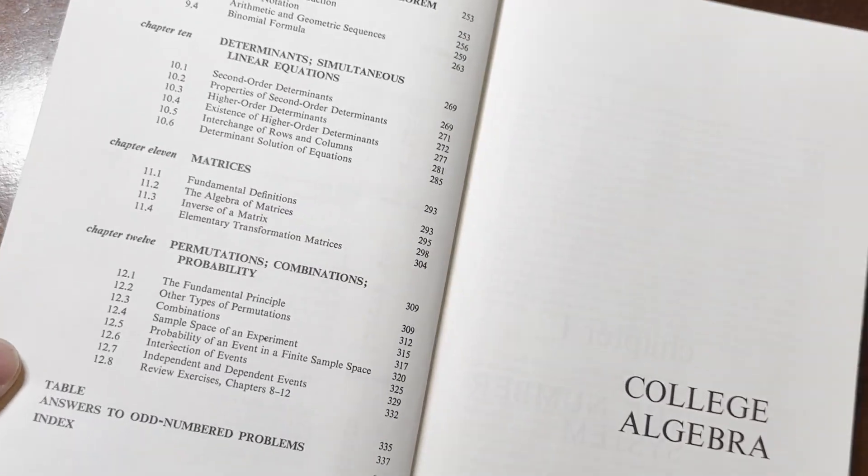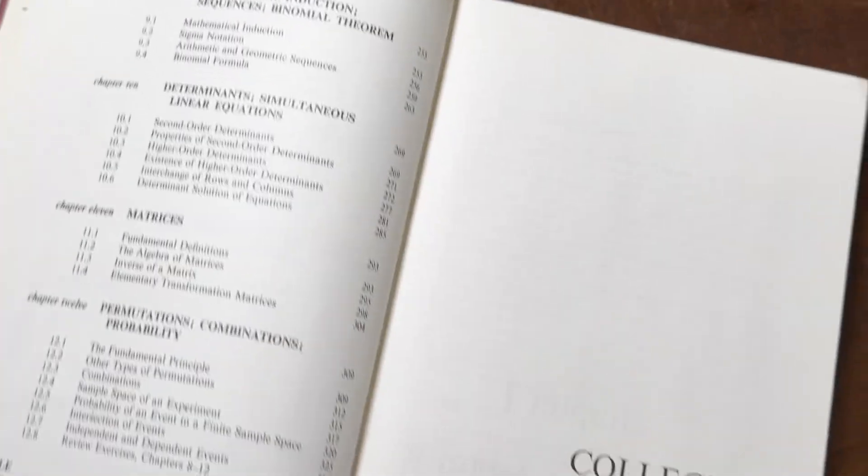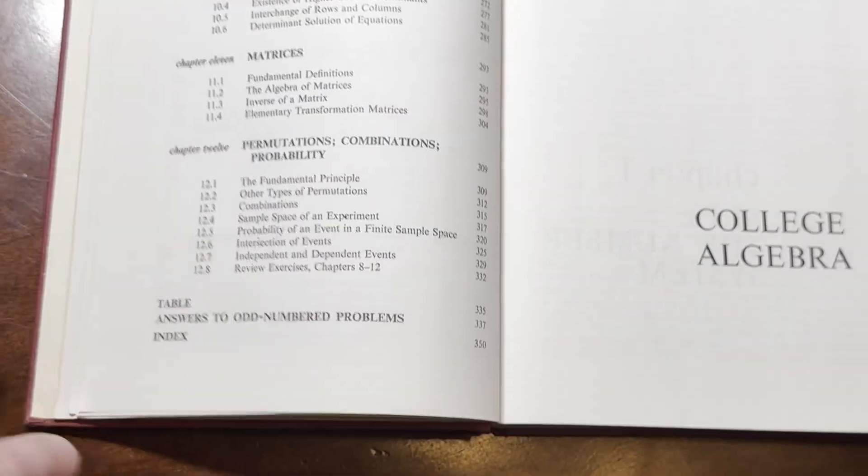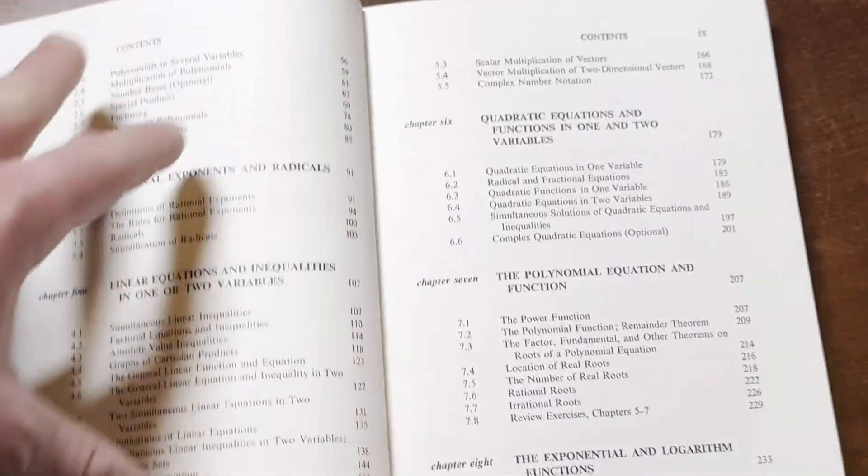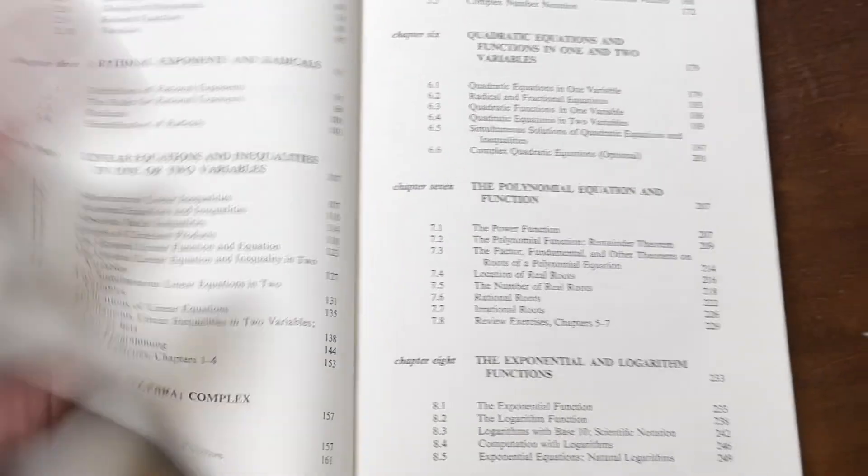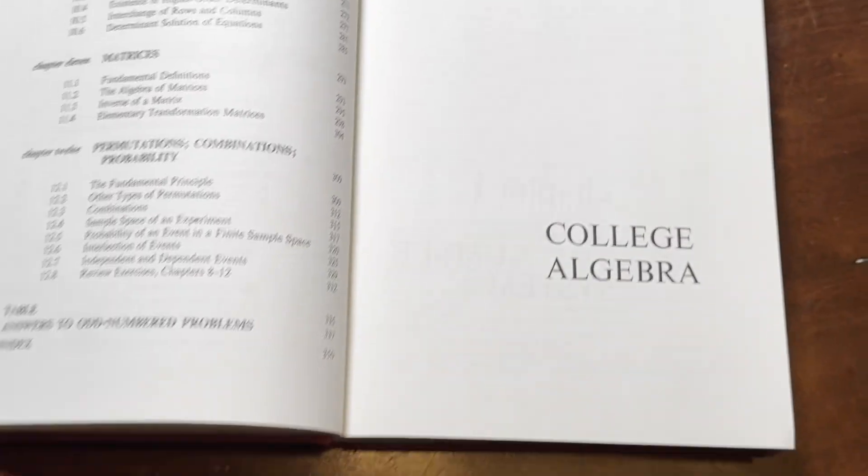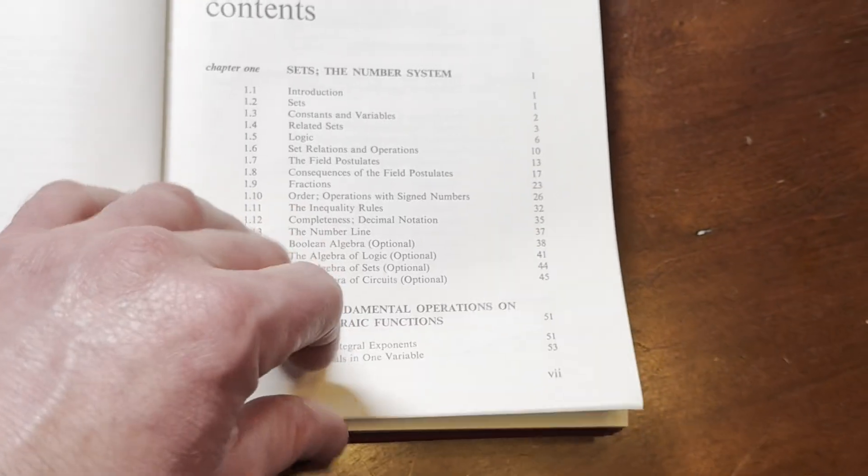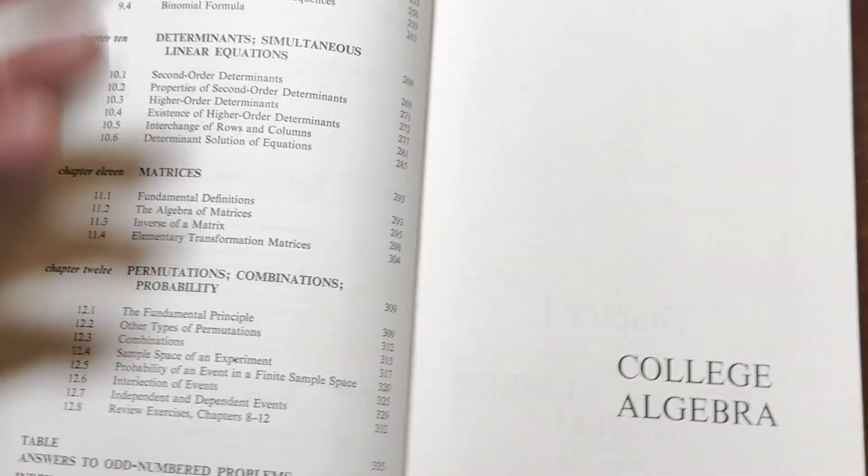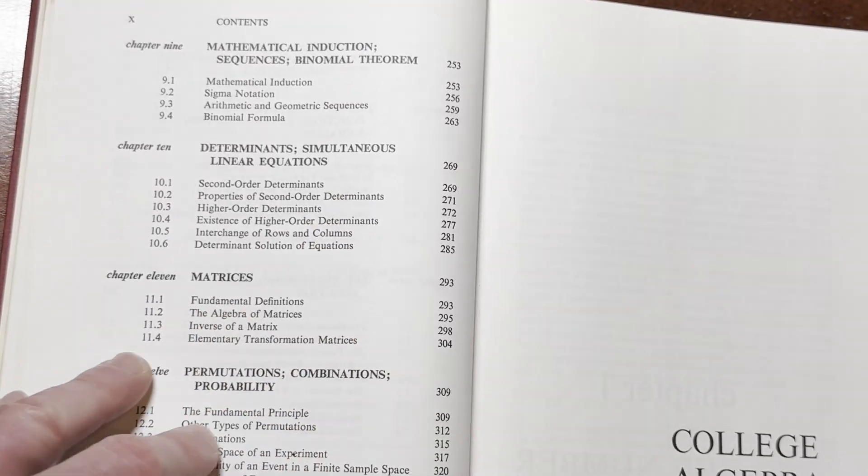And let me just say, this book is very different from the modern books. This one has answers to the odd-numbered problems. And I want to emphasize that this particular book has pretty much all the topics that you need in a modern college algebra course. But it has extra stuff.